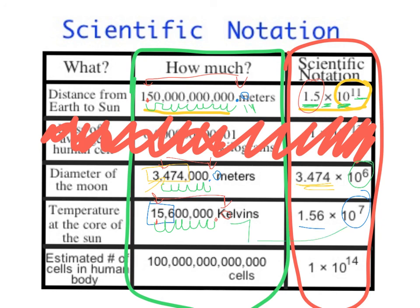The estimated number of cells in a human body. Wow, we have quite a few. Assuming there's a decimal point here, we're going to move it up here. So that gives us 1. Now we're looking for 14 decimal places. 1, 2, 3, 4, 5, 6, 7, 8, 9, 10, 11, 12, 13, 14. Sure enough, 10 being the decimal places, 14 steps, this is correct.